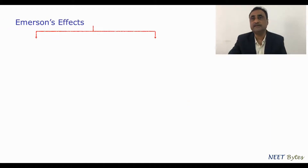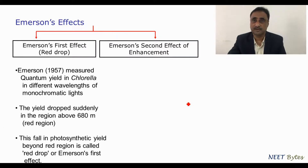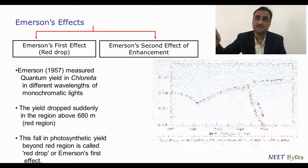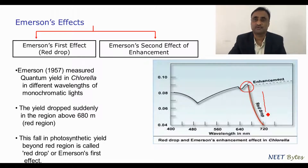Emerson was studying the photosynthetic yield of Chlorella. For this, he gave a monochromatic beam of light and calculated the photosynthetic yield. He observed that as the wavelength increases, the photosynthetic yield kept on increasing, starting from the blue region to the red region. But beyond the red region, there was a sudden decrease in the photosynthetic yield. This was referred to as the red drop phenomenon.